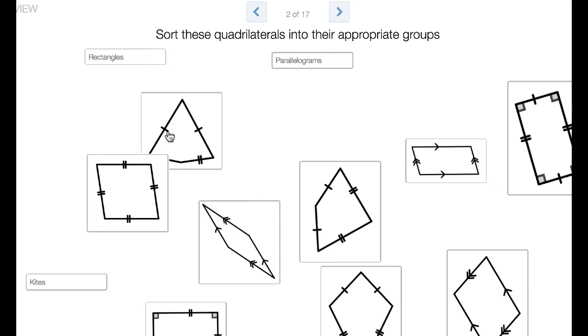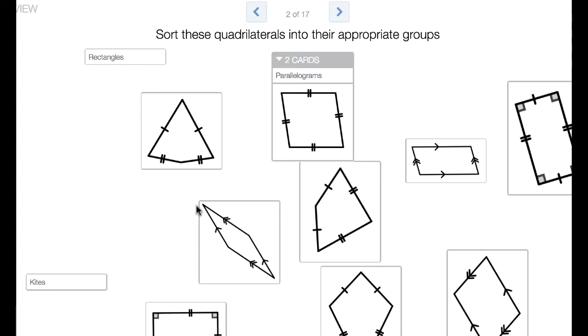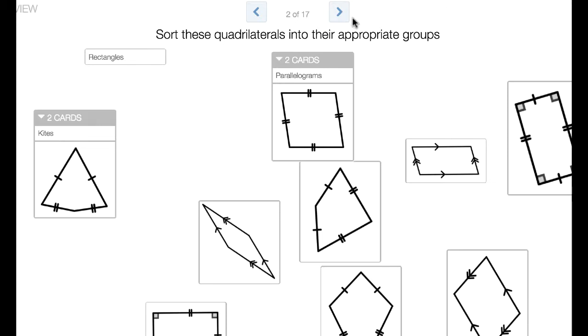This first activity slide is a sort to get them rethinking the idea of what rectangles, kites, and parallelograms are. They're just doing the card sort to sort the items into various groups. Not too much here in actual teaching, just making sure they understand the difference between the shapes.